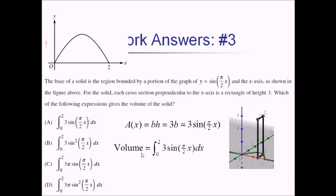Now we just have to match one of the answer choices. Answer choice A looks like a pretty good fit. B is close, but they're squaring the sine, and we don't want to do that. C and D both have extra pi's left over. So we're going with choice A.